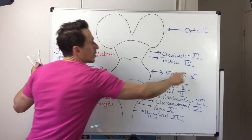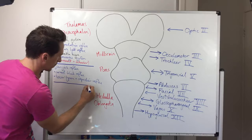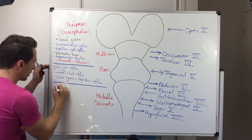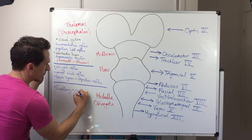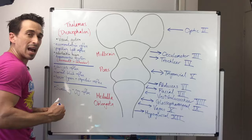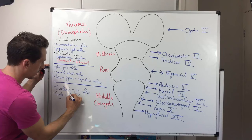Looking at the medulla: a couple of important reflexes. The swallowing and gag reflex — both the sensory coming in and the motor going out involve the glossopharyngeal and vagus nerves. The same cranial nerves are involved in the cough and sneeze reflex.